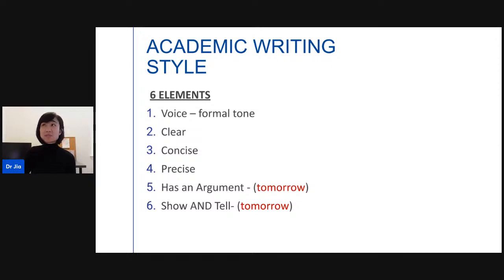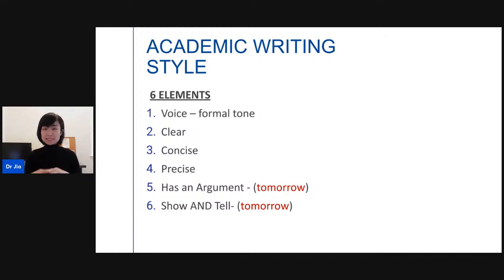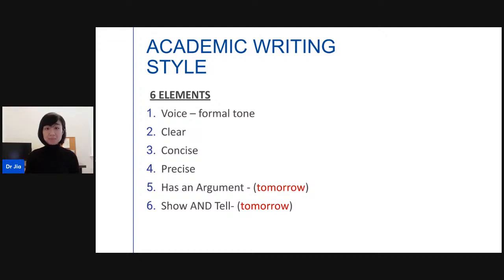To break it down in the most simple form, these are the six elements of academic writing. First is the voice — it is a formal tone, so we don't use contractions; not 'it's' but 'it is.' Second, it has to be clear. Third, concise. Fourth, precise. Fifth, it has an argument — that really is what makes a research paper a research paper. Sixth is a bonus tip called 'show and tell.' I'll talk about elements five and six tomorrow as they need a separate session.